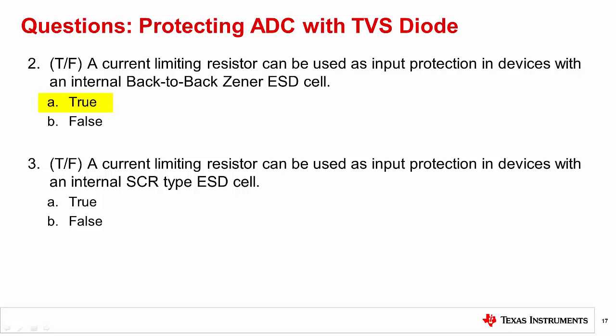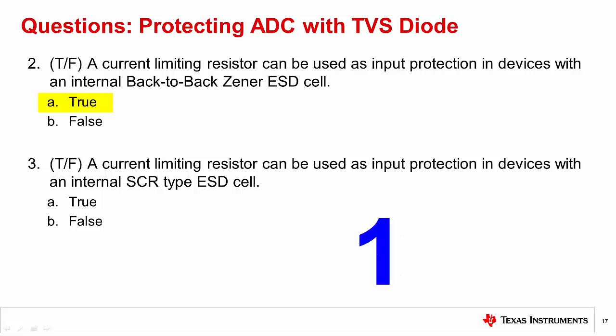Question three: True or false — a current limiting resistor can be used as input protection in devices with an internal SCR type ESD cell. The correct answer is false. For SCR type input protection, you never want this protection to trigger when power is applied. Thus, for this type of internal ESD input protection, you should always use an external TVS diode to avoid triggering the internal SCR.